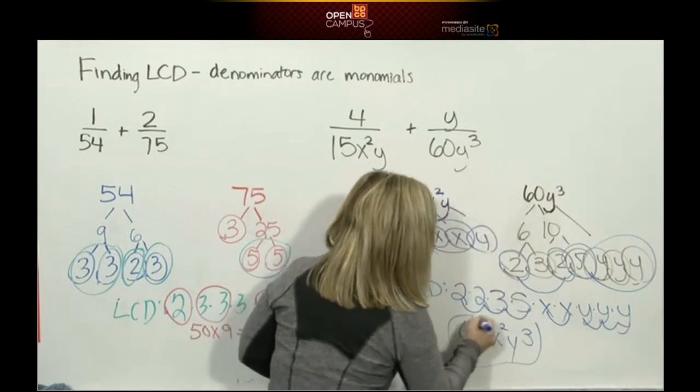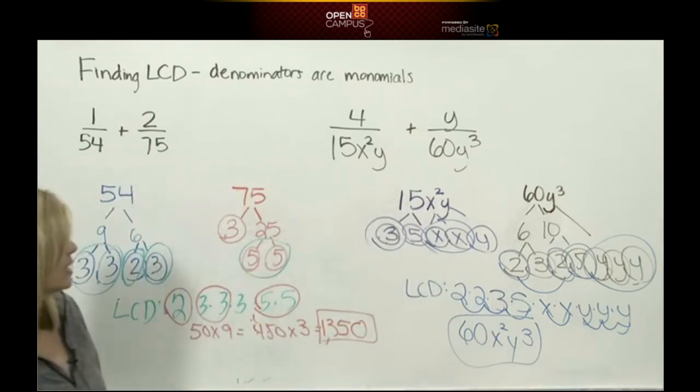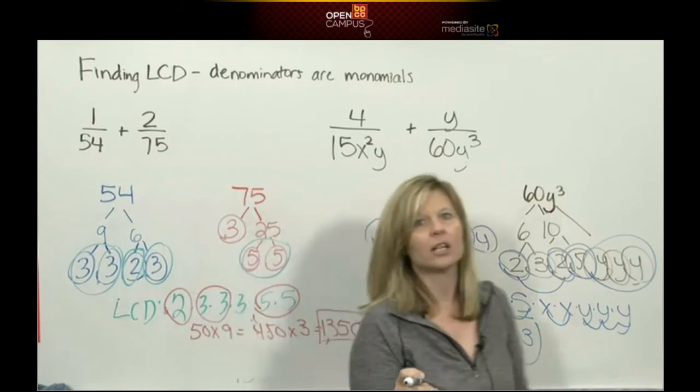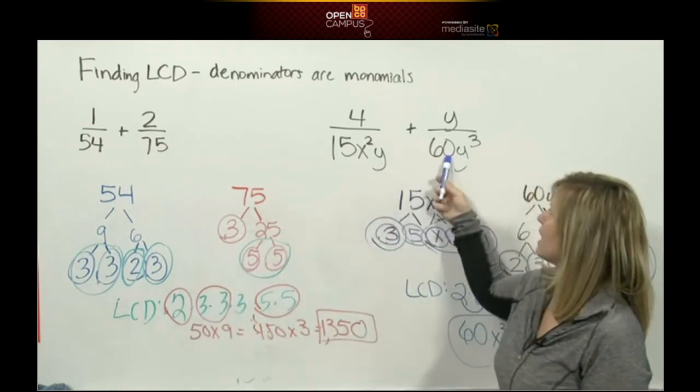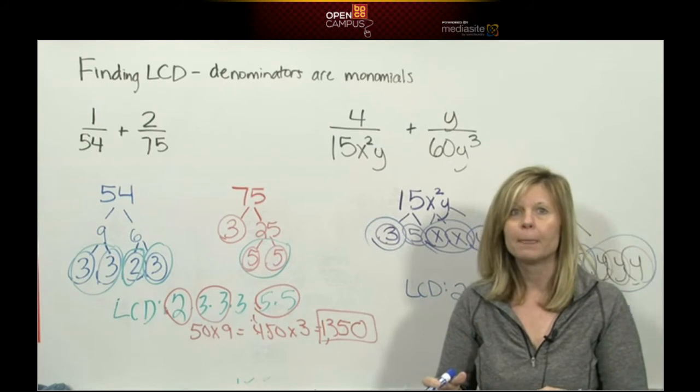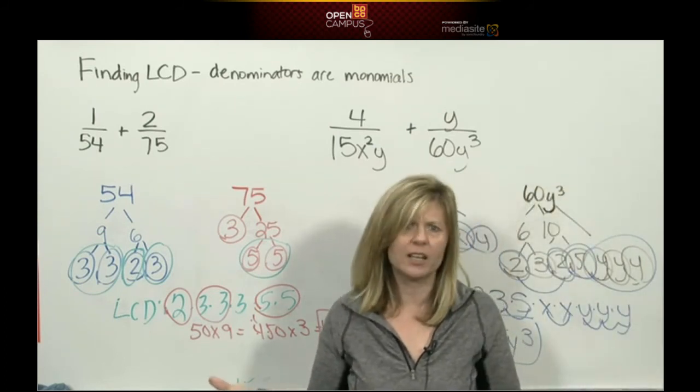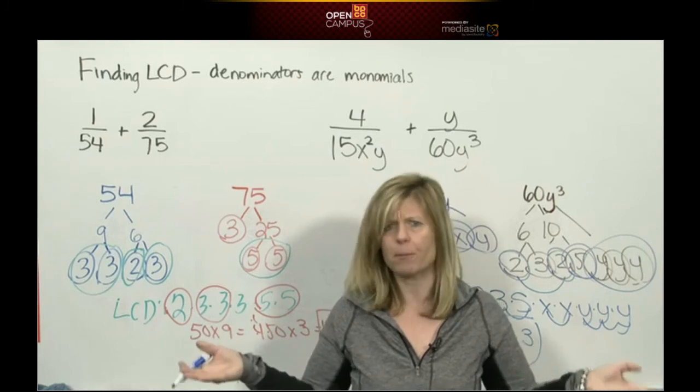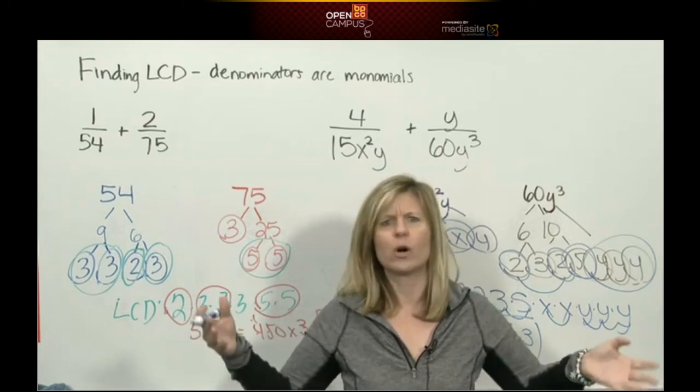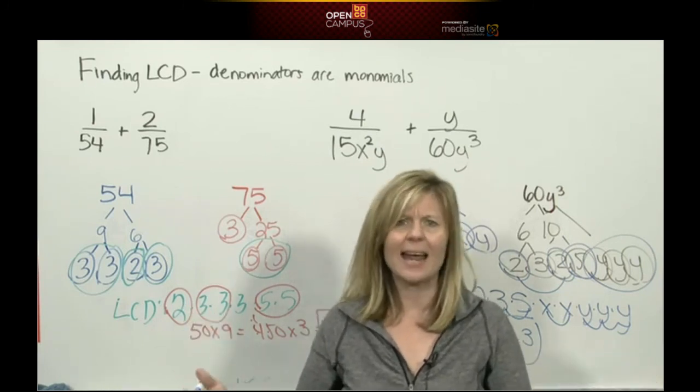Now I know what you're thinking: you're saying, 'But Miss Black, I could have looked at that and figured that out,' and that's fine. Just like if I gave you the denominator 3 and 7, would you have to do any work for the LCD? No. 3 and 7 are prime, and you know the LCD is 21. Just like 6 and 8—if you know the LCD of 6 and 8 is 24 off the top of your head, that's great.